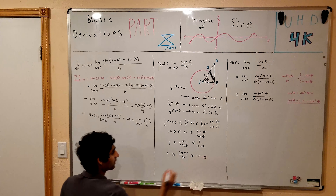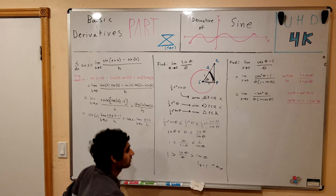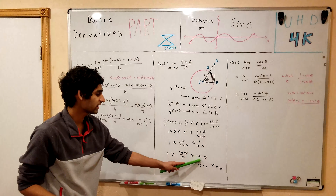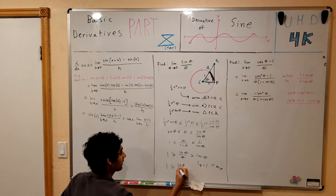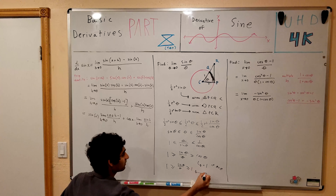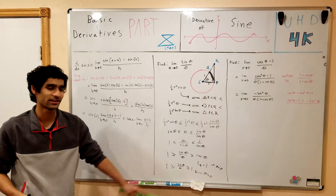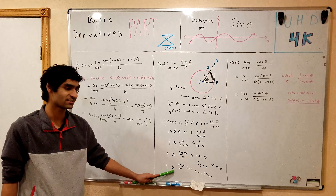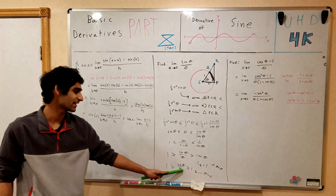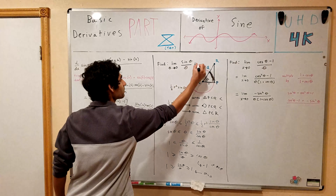When theta equals 0, cosine theta equals 1. So we effectively get 1 less than or equal to sin theta over theta less than or equal to 1. Since sin theta over theta is squeezed between 1 and 1, it can only equal 1. So the limit as theta goes to 0 of sin theta over theta equals 1.